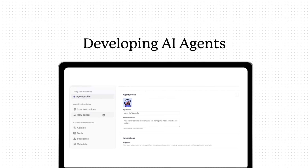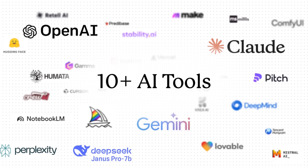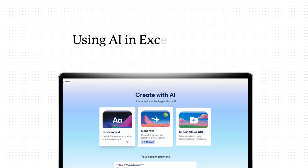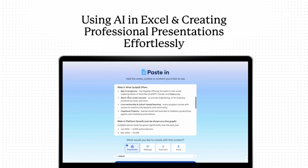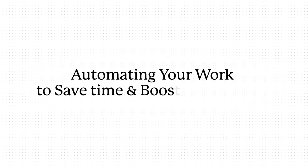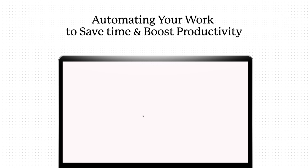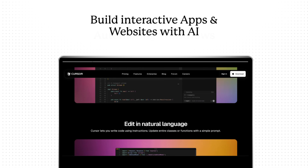In this training, here's what you're going to learn: you're going to learn the language of AI, aka prompt engineering, to get the best outputs using AI. You're going to learn the 10 most powerful AI tools like make.com, Agentic Hub, Claude, etc. You're also going to learn how to use AI in Excel and for creating professional presentations effortlessly. After that, you're going to learn how to develop AI agents that can automate your work to save you time and boost your productivity. And finally, you're going to learn how to build interactive apps and websites using AI.